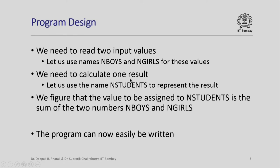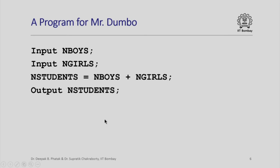Next we need to calculate one result, which is the total number of students, so let us use the name n_students to represent the result. The value to be assigned to n_students is nothing but the sum of n_boys and n_girls, so we will need to do an assignment operation. The program can now easily be written: input n_boys; input n_girls; n_students = n_boys + n_girls; output n_students. Notice that each instruction is terminated by a semicolon, as agreed — looks like a complete program.